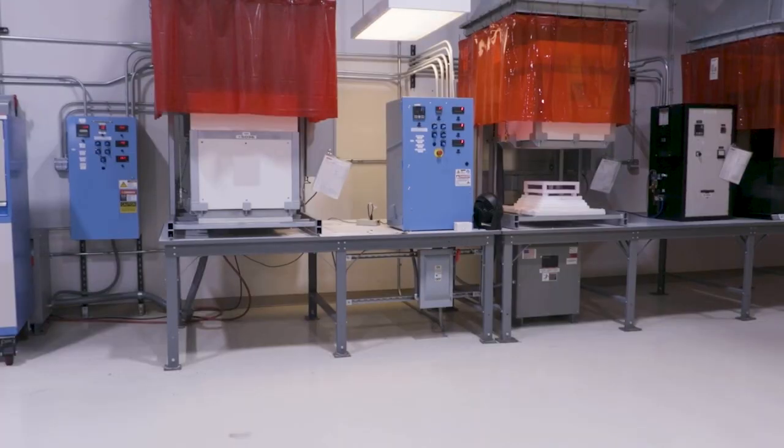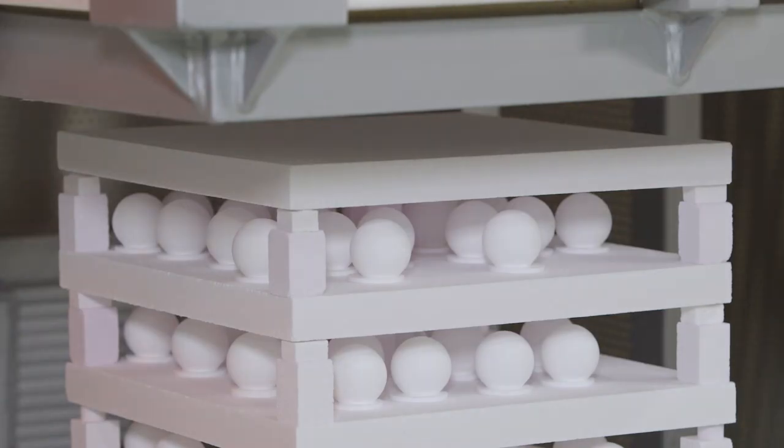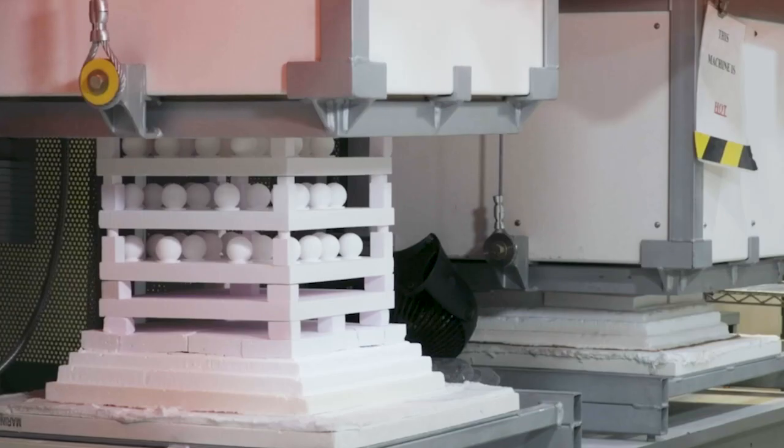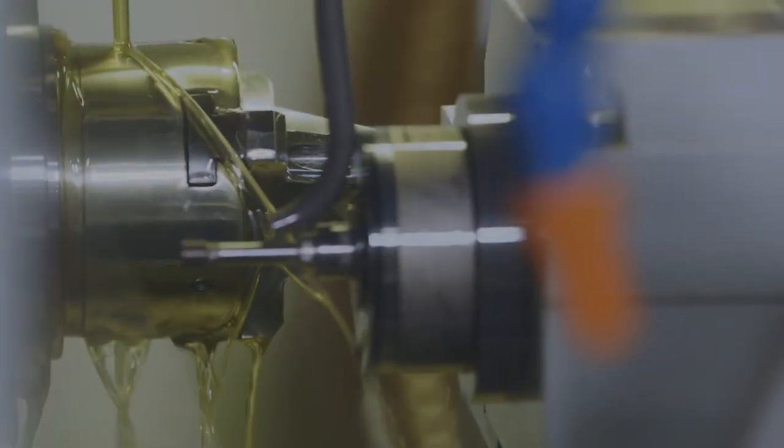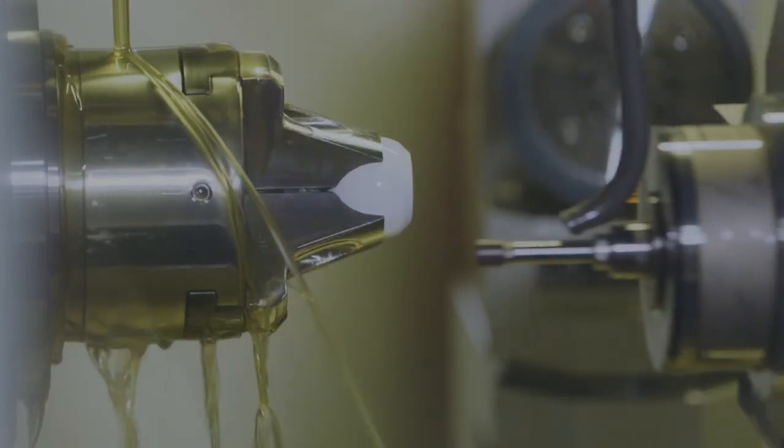Then, the part gets fired in a periodic kiln. Sintering at high temperatures creates a chemical reaction that bonds the grains of powder together, creating one solid piece of ceramic. Precision grinding and polishing creates the final finishes on the component.